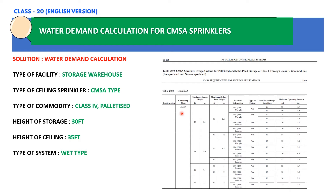I have extracted the table for class 4 commodity, which shows maximum storage height in feet and meters. Based on a storage height of 30 feet — which is 9.1 meters — and a maximum ceiling height of 35 feet, we can identify the appropriate row. Based on this, we select a pendent type sprinkler with a K factor of 19.6. Since the system is a wet system, the number of sprinklers to be considered for our area of operation will be 15, and the minimum pressure required for each sprinkler will be 25 PSI or 1.7 bar.